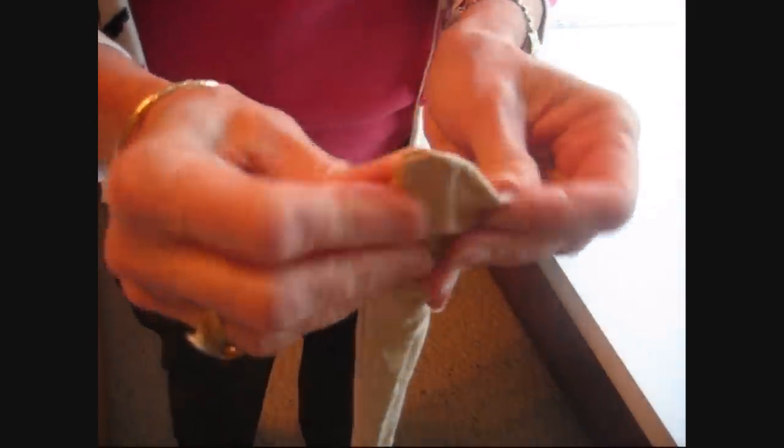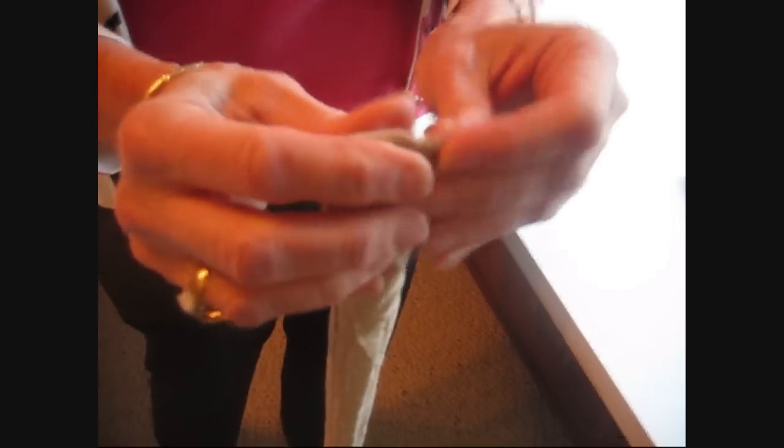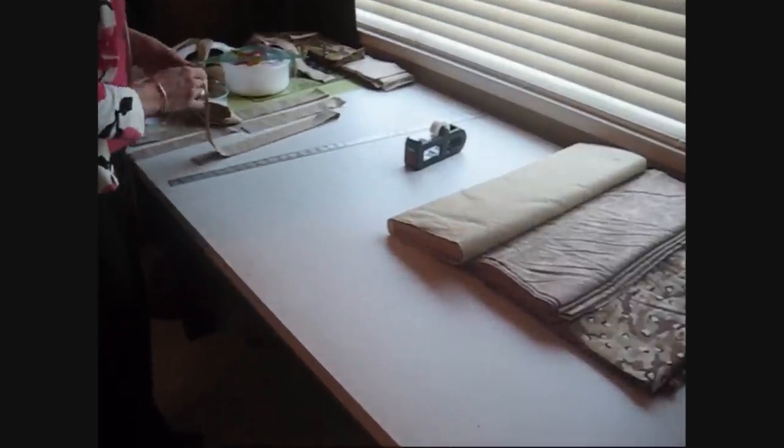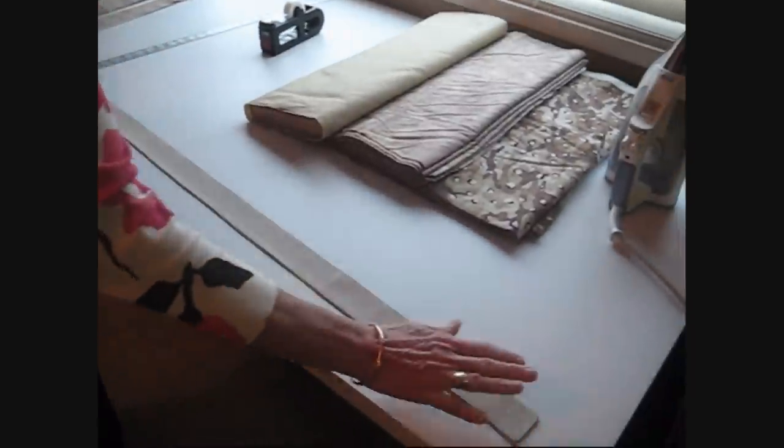Now you use the chisel point to poke out the corners so you have a nice square corner on the end. The next step is to iron this flat like so.